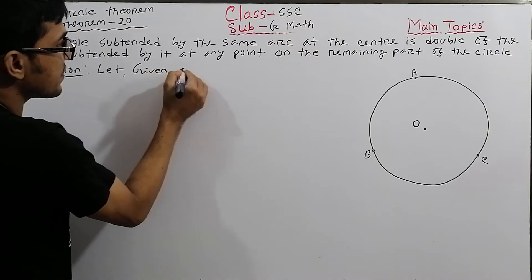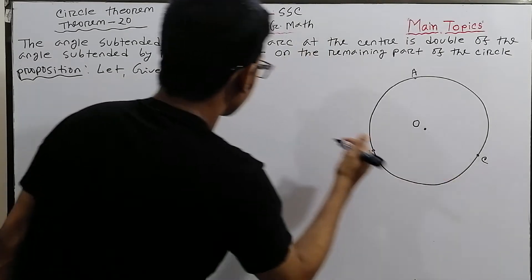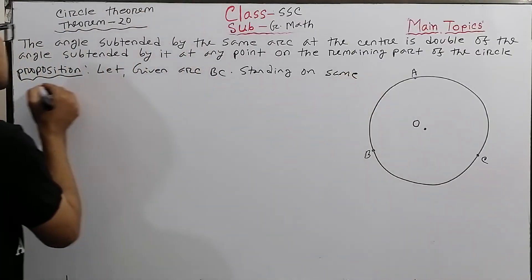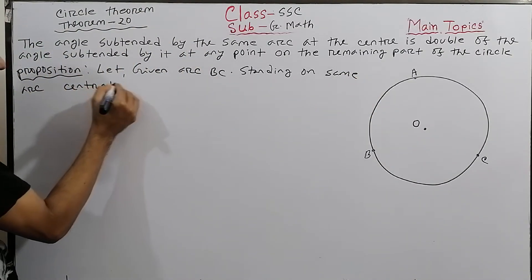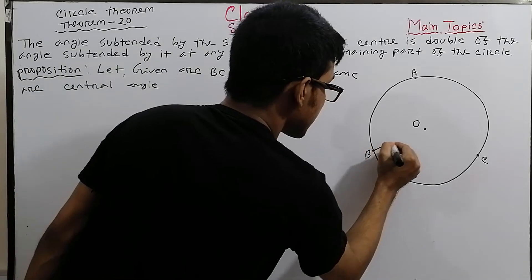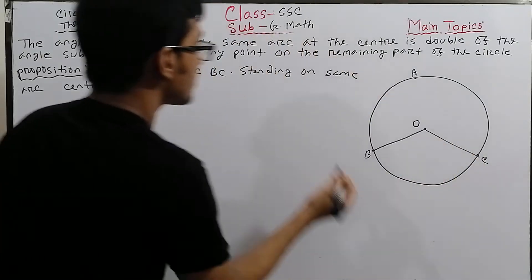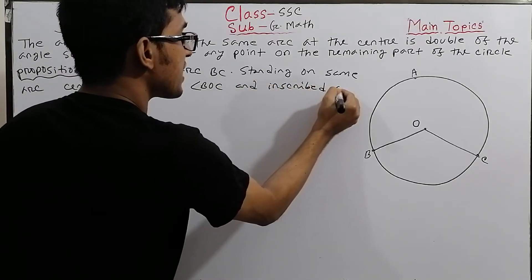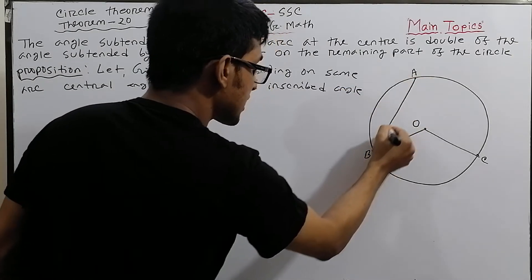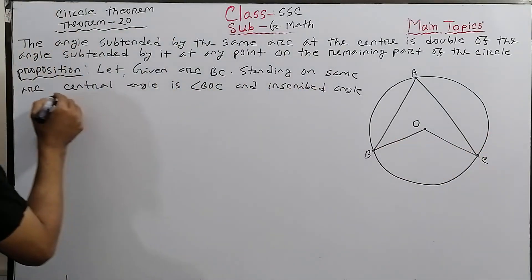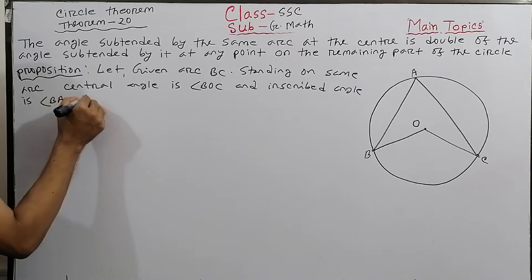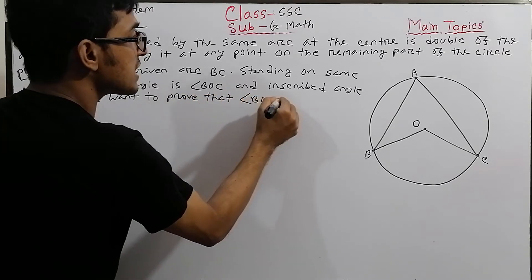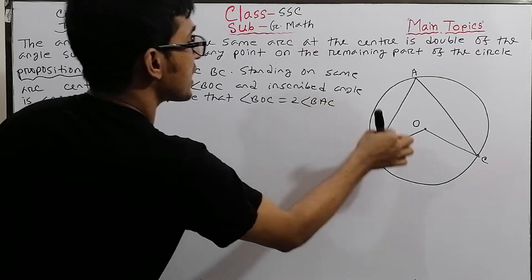Given: BC is an arc. The angle standing on the same arc — the central angle is BOC, and the inscribed angle is BSC. We want to prove that BOC is double BSC, i.e., BOC = 2·BSC.